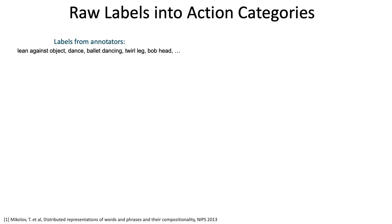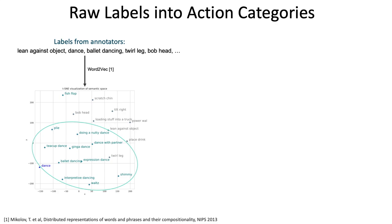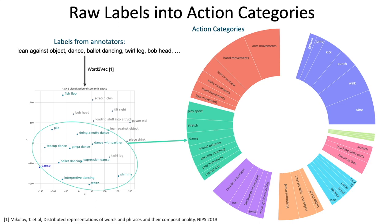We create action categories in Babel by clustering the annotator's raw labels in a semantic space. A t-SNE visualization of this space shows that semantically similar actions like variants of dance are closer together and unrelated actions are farther apart.